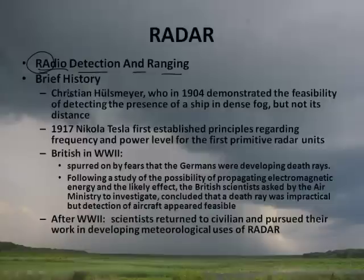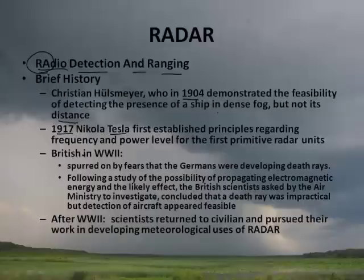A little brief history: in 1904, a guy named Christian Holzmeier — that sounds German — demonstrated the feasibility of detecting the presence of a ship in dense fog, but he couldn't tell how far it was. Then in 1917, Nikola Tesla — a very famous scientist — established the principles regarding the frequency and power level for the first primitive radar units.